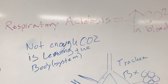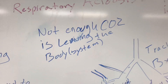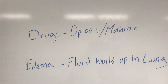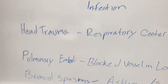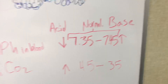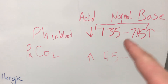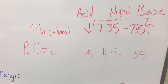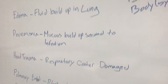To keep it simple: respiratory acidosis just means you have a higher concentration of CO2 in the blood. Why? Because you can't get the CO2 out — you can't breathe it out. What can cause that? Drugs, edema, pneumonia, head trauma, pulmonary embolism, and bronchial spasms. The numbers one more time: if your pH level is lower than 7.35 your patient is acidic, and if the CO2 measurement is above 45 your patient is acidic.